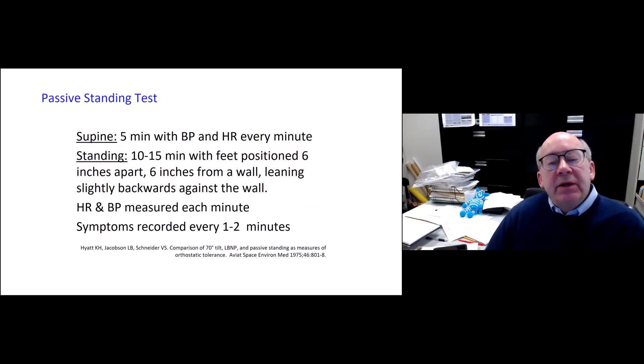With the passive standing test, we have them in our clinic, supine for five minutes, checking a blood pressure and a heart rate each minute. And then they stand for 10 to 15 minutes with the feet positioned away from the wall, leaning back. Heart rate and blood pressure are measured each minute. And we also record their symptoms on a zero to 10 scale every one to two minutes. This was introduced as a test back in 1975. And it turns out that it's fairly close to a formal tilt table test for at least the first 10 minutes or so.